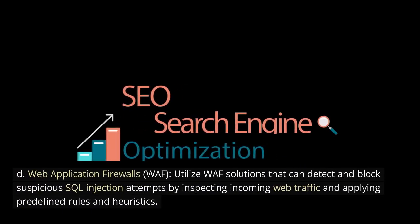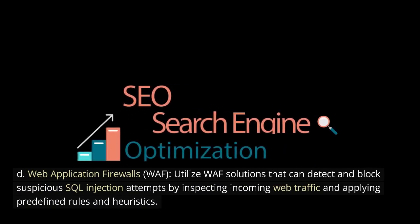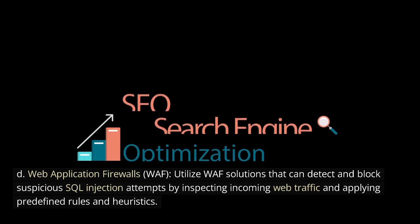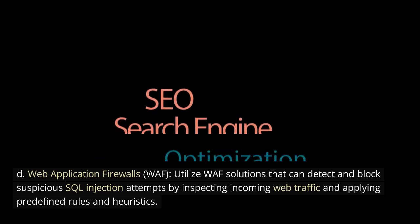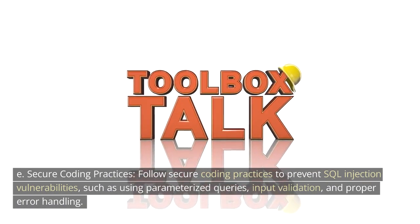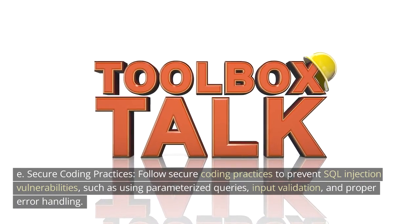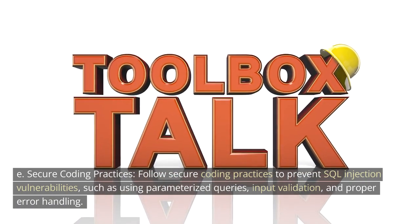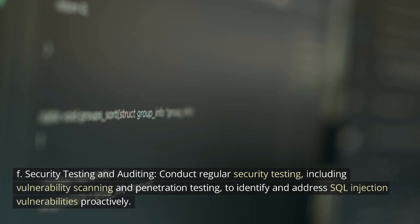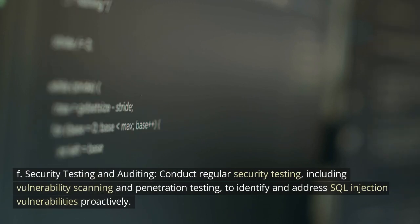Utilize web application firewall, WAF, solutions that can detect and block suspicious SQL injection attempts by inspecting incoming web traffic and applying predefined rules and heuristics. Follow secure coding practices to prevent SQL injection vulnerabilities, such as using parameterized queries, input validation, and proper error handling. Conduct regular security testing, including vulnerability scanning and penetration testing, to identify and address SQL injection vulnerabilities proactively.